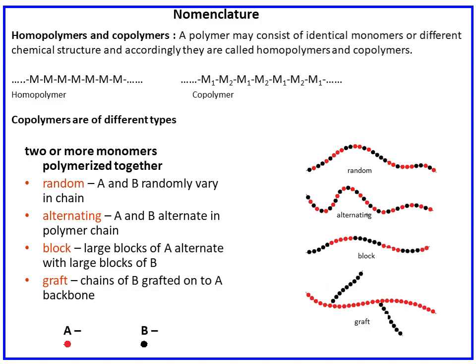When a polymeric material is composed of the same repeating unit, it is called a homopolymer. When there is more than one monomer in the polymeric chain, it is called a copolymer. In a copolymer example, you can see M1, M2, M1, M2 — the repetition of M1 and M2, composed of two different monomers.